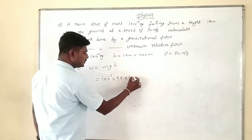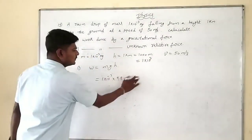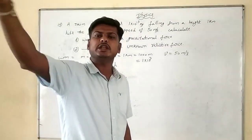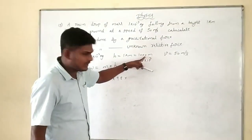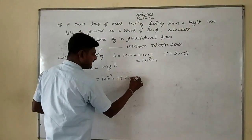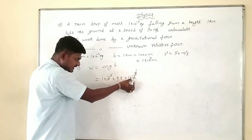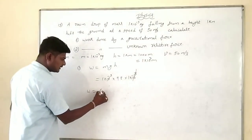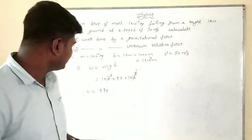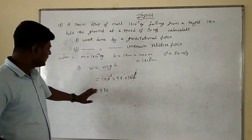h is 1000 meters, which we can write as 1×10³. So work done W = 1×10⁻³ × 10 × 1×10³. When we add the powers: minus 3 plus 3 equals 0, so W equals 10 joules. That is the work done by the gravitational force.